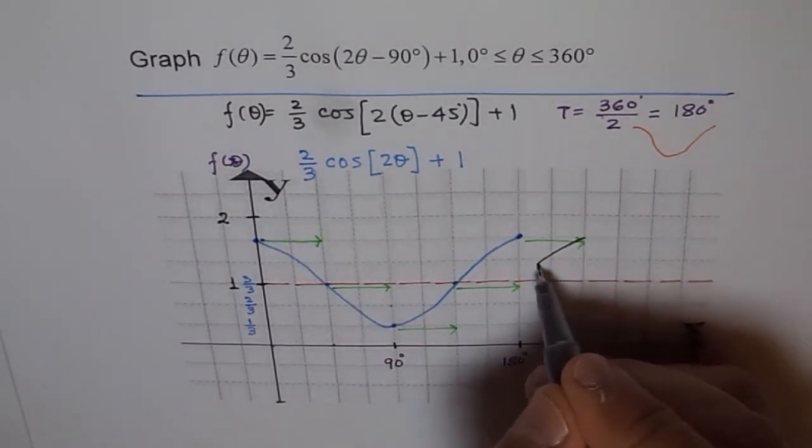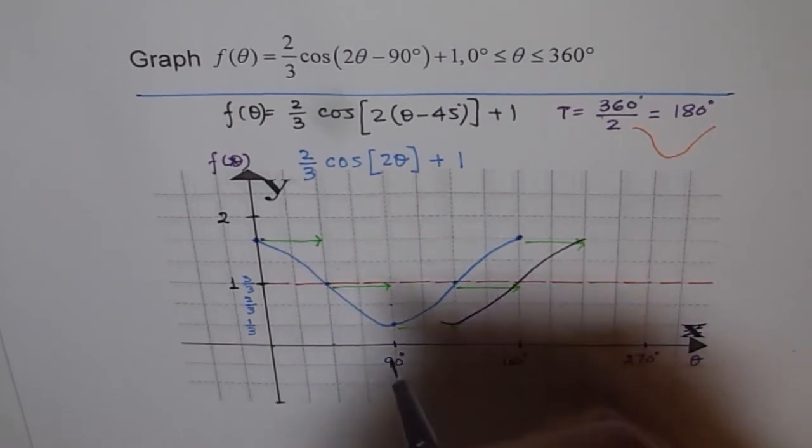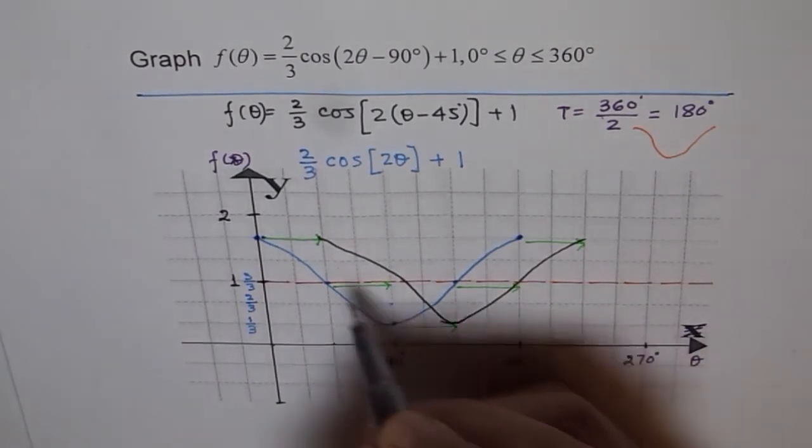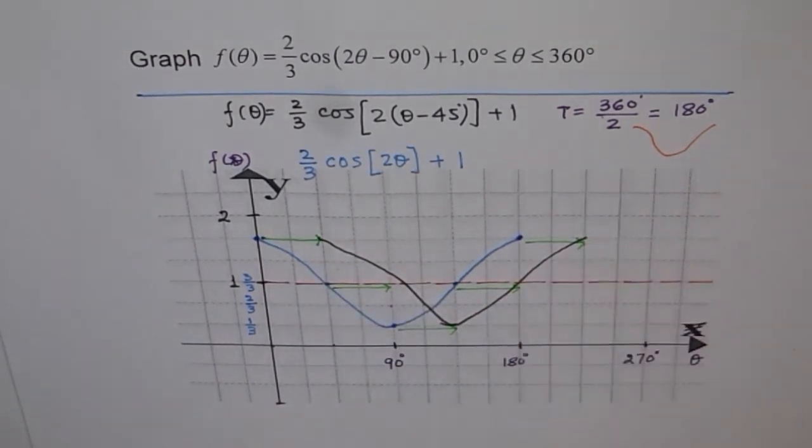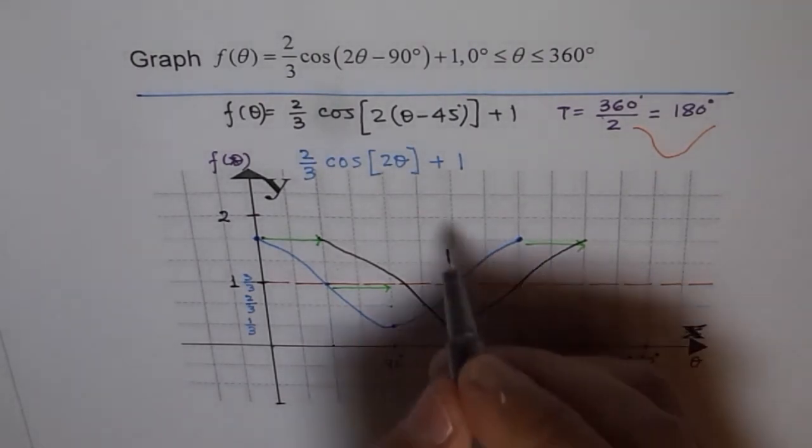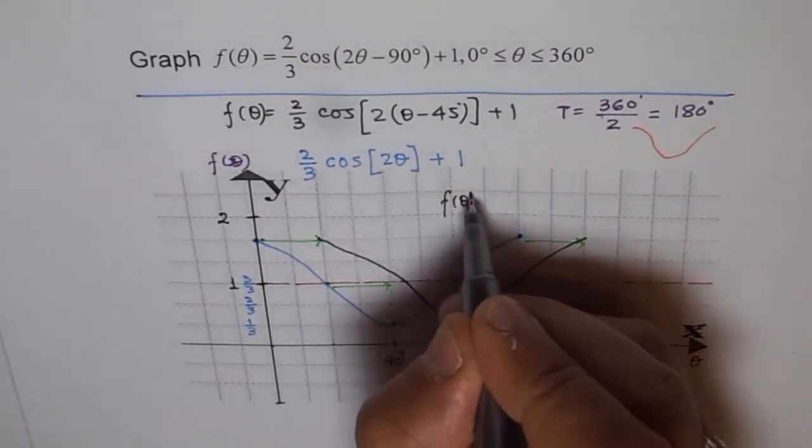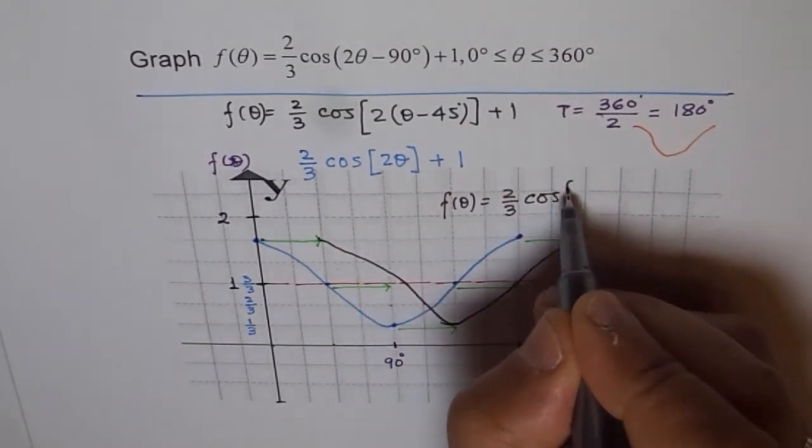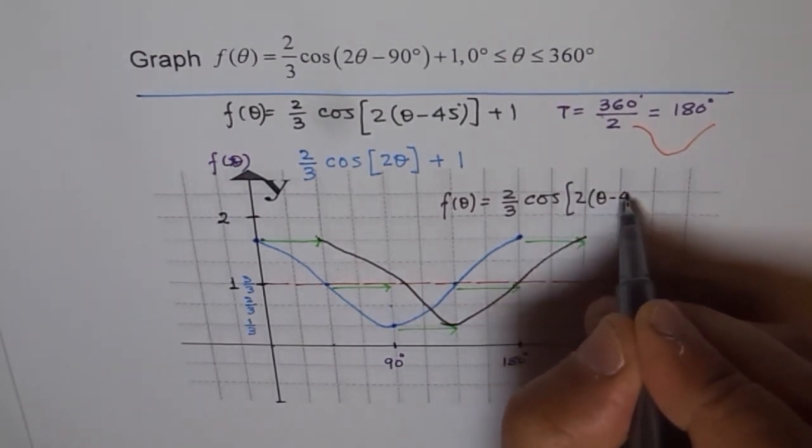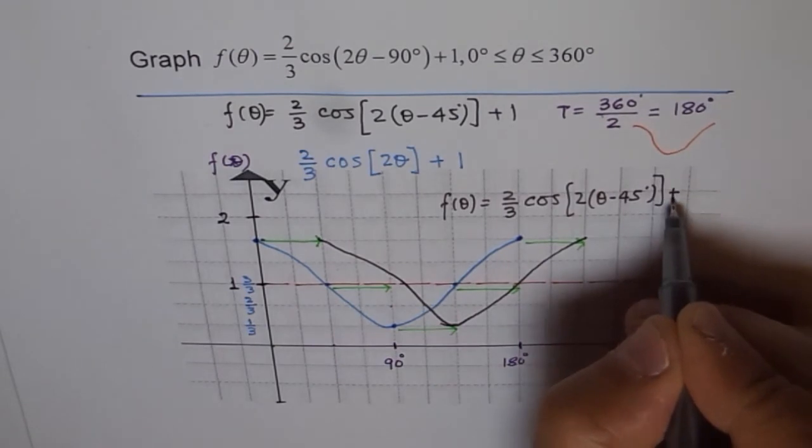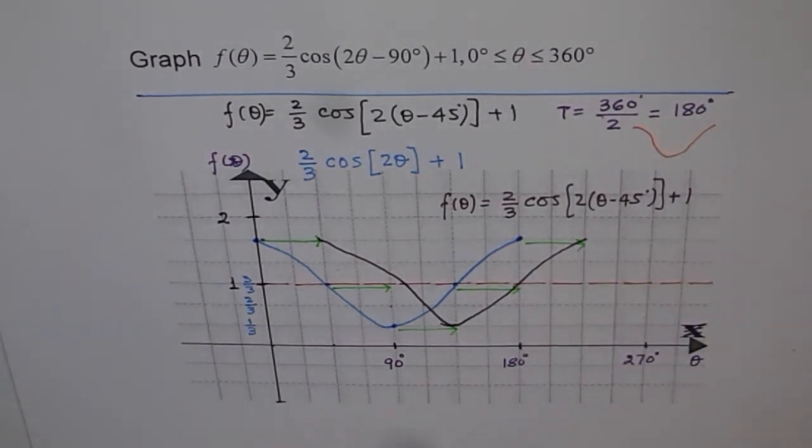We get a curve here which will be looking like this. That is your cosine function now. That is your final graph. This graph is f of theta equals 2 over 3 cos of 2 theta minus 45 degrees plus 1. That is your graph.